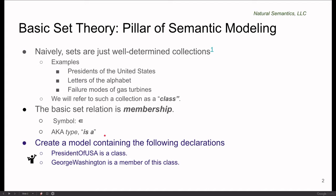So with that introduction, let's do a simple example to solidify this. For this class, I'd like you to create a model which contains the following declarations: that there is a class President of USA, and that George Washington is a member of that class.